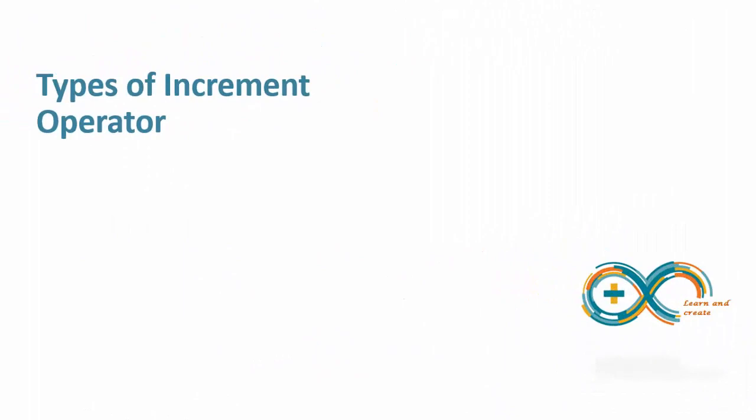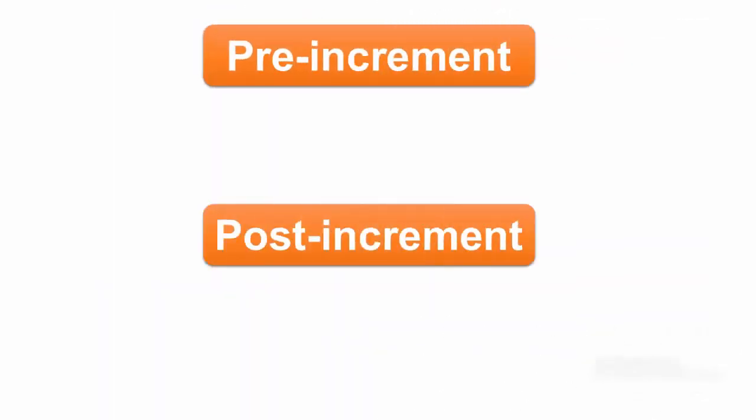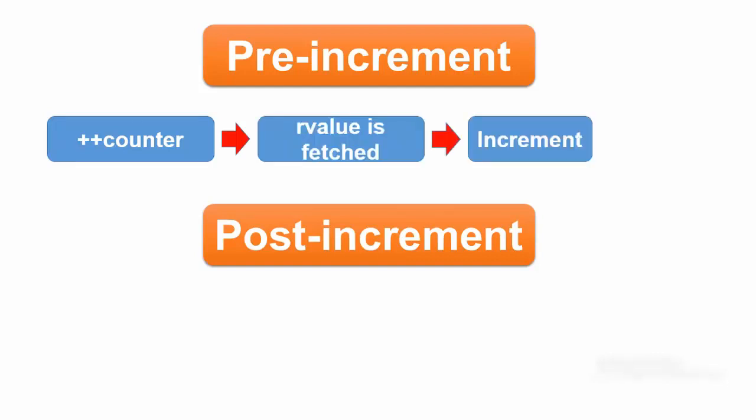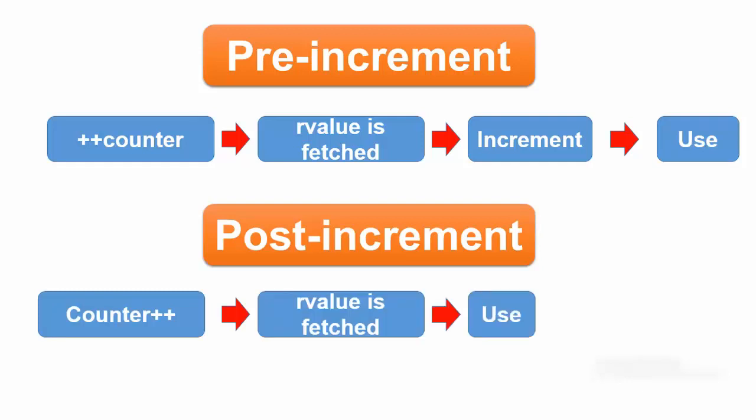There are two types of increment operator, pre-increment and post-increment. The pre-increment operator is written like this. The interpretation is that the R value of the variable counter is fetched, its value incremented and then used in whatever expression in which it happens to appear. The post-increment operator is written like this. In this case, the R value of the variable counter is fetched and used in the expression and then incremented. Notice that this symbol is increment operator and it appears after the variable name with the post-increment operator and before the variable name in the pre-increment operator.